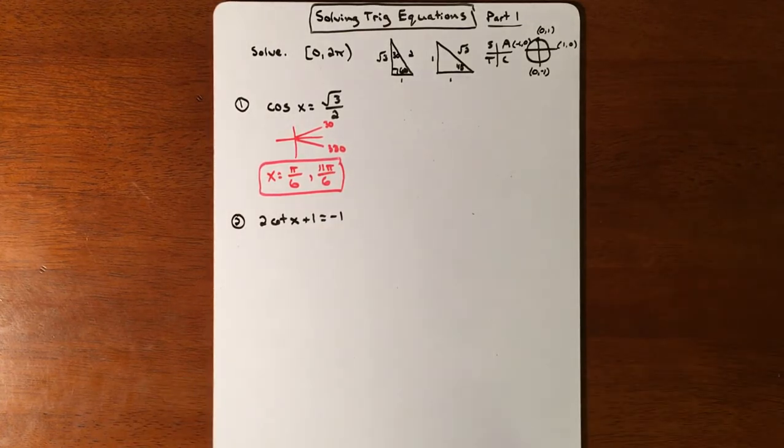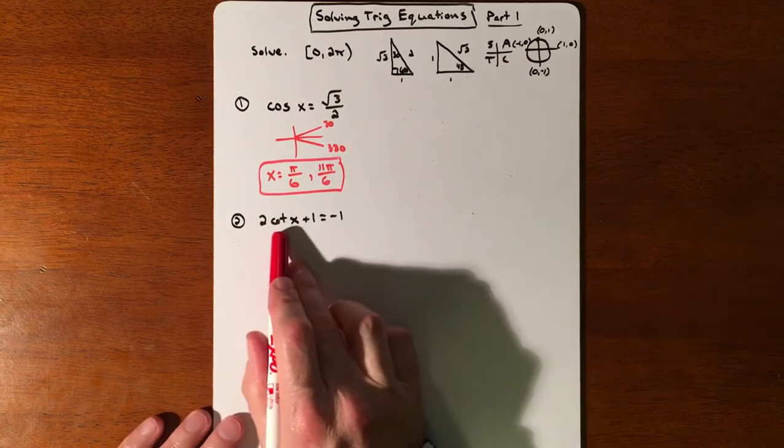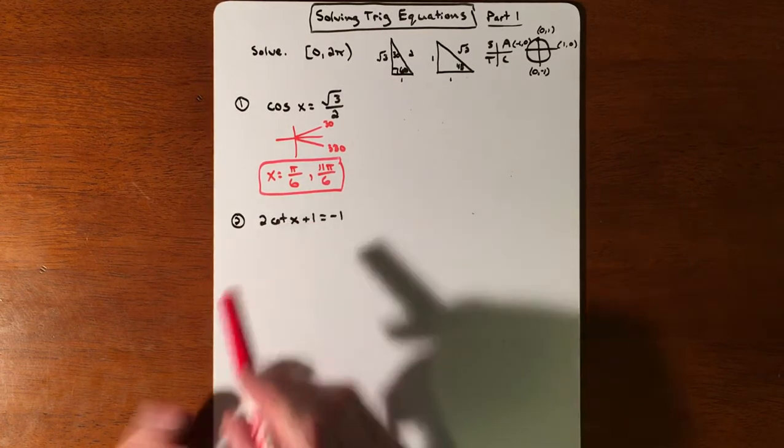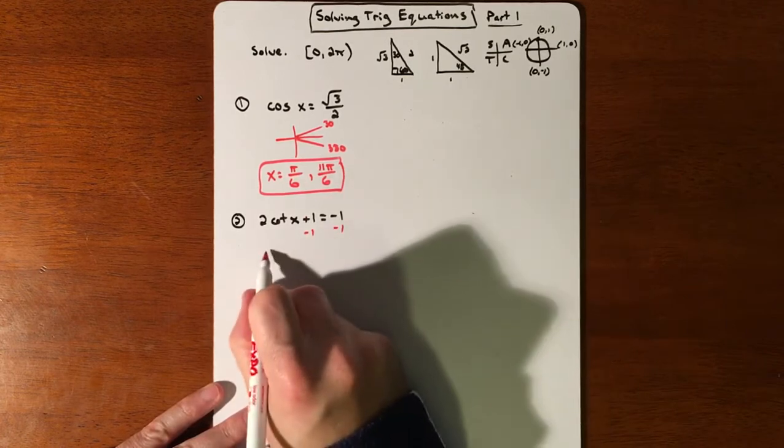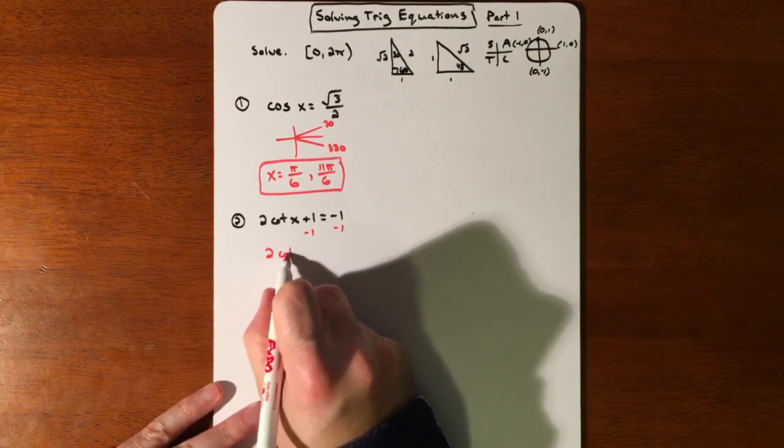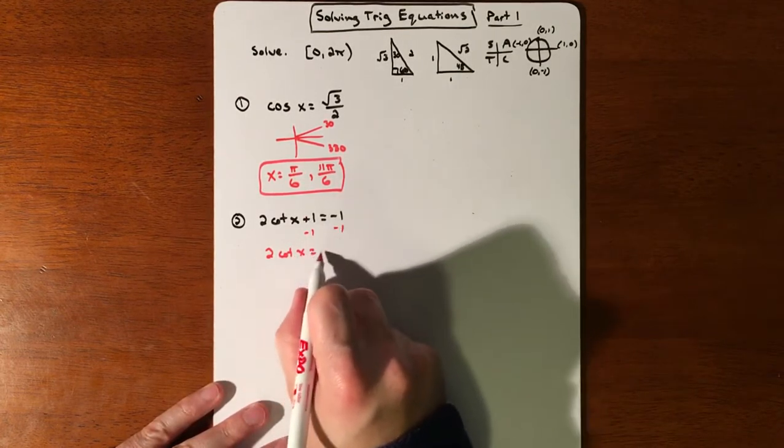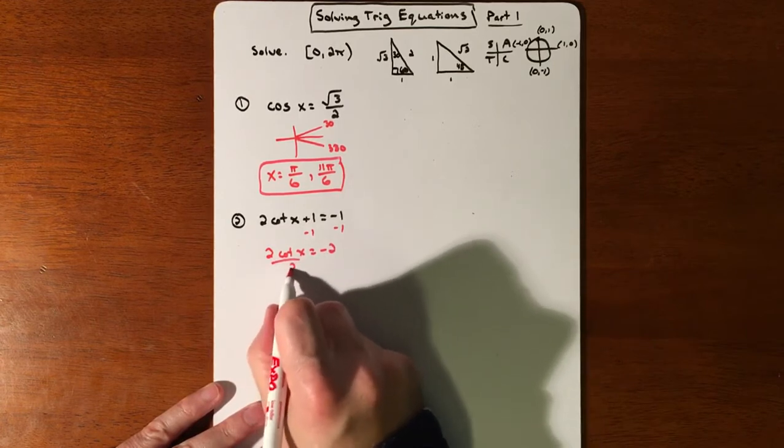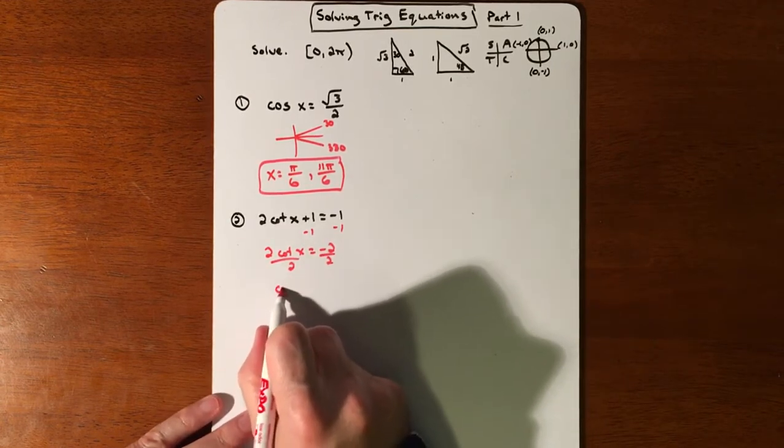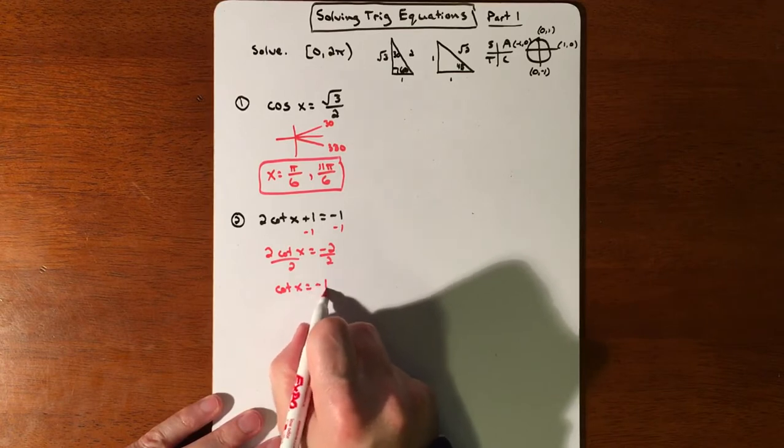We're going to basically try to get cotangent by itself. So we're going to subtract 1, divide by 2. We'll subtract 1, that gives us negative 2. Cotangent x is equal to negative 2. Divide by 2. So cotangent x equals negative 1.